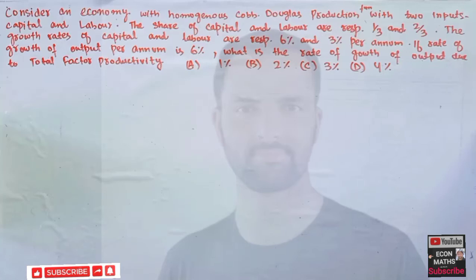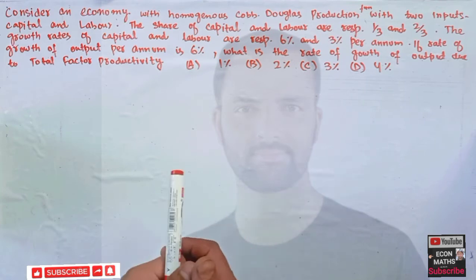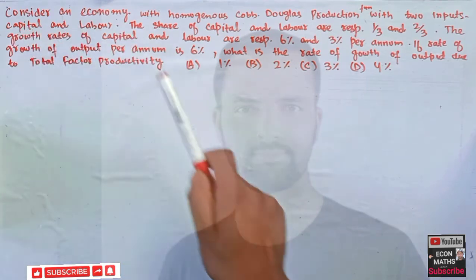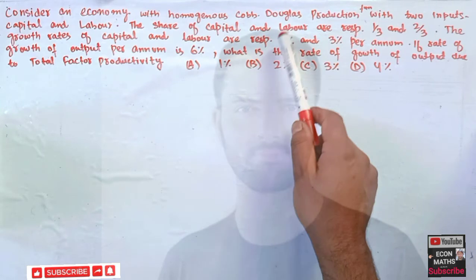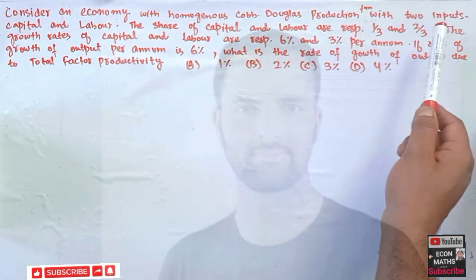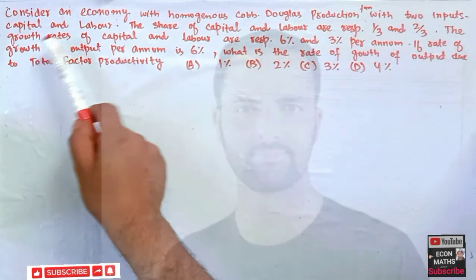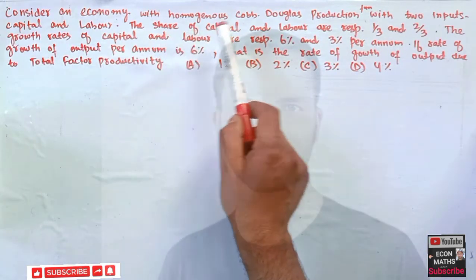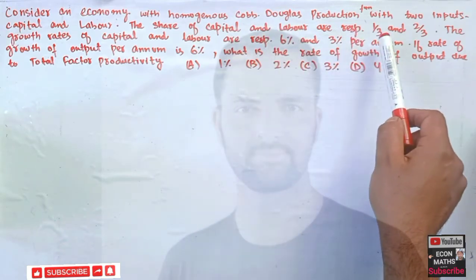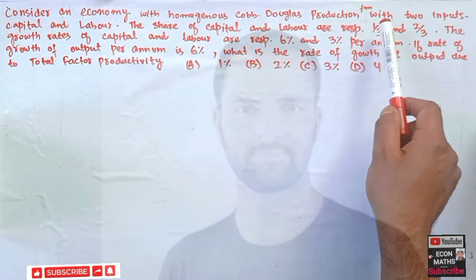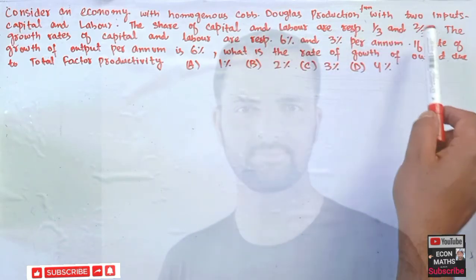Hi, this is Halal. In this video on the mathematical economics series, we will try to solve a problem on Cobb-Douglas production function. Consider an economy with a homogeneous Cobb-Douglas production function with two inputs: capital and labor. The shares of capital and labor are respectively one-third and two-thirds.